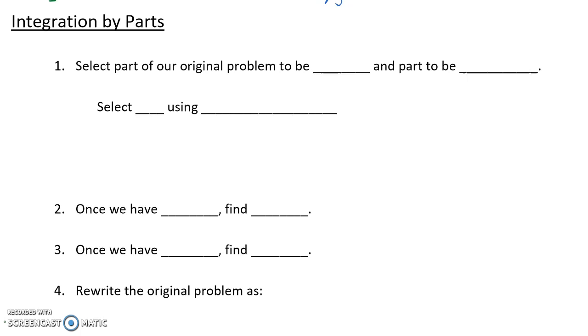What we'll do is select part of our original problem to be equal to u, so that part will look like integration by substitution. But then we'll be selecting another part of our problem to be equal to dv, so a different variable here. We've got u and v and we're going to make those selections using a particular acronym, LIATE.